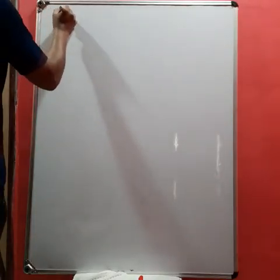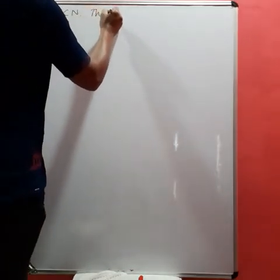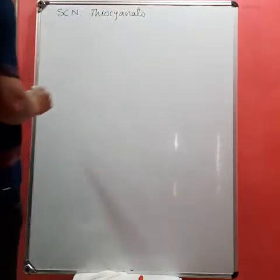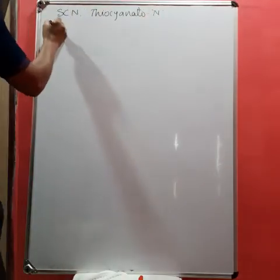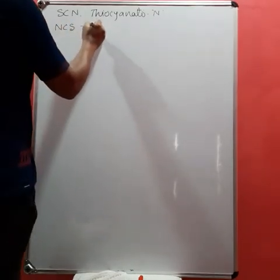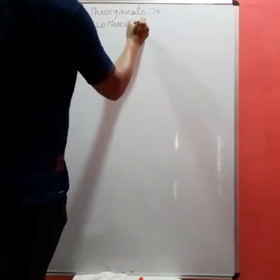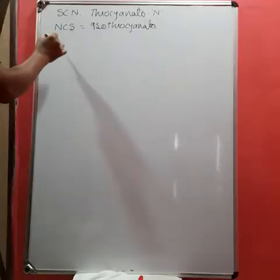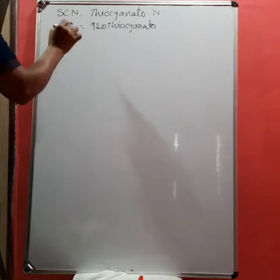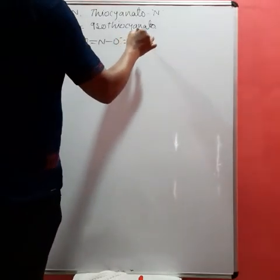SCN can be written as thiocyanato. If N is the donor atom, you write thiocyanato, but if it is written as NCS, it becomes isothiocyanato — isothiocyanato. Here, if O is the donor atom, like NO2, it can be written as O-N-O, and this is called nitrito.